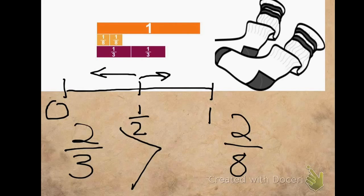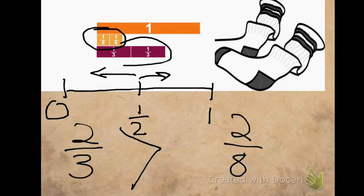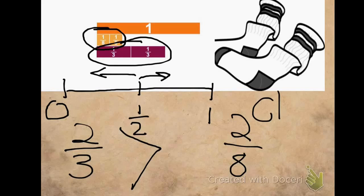If we use a number line to help us compare, we can see that 2 eighths is less than 2 thirds, which means that Chris has more white socks than his sister.